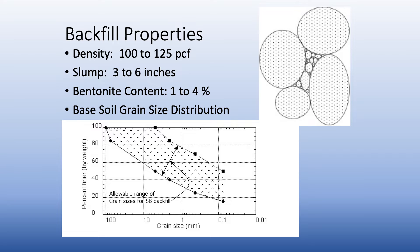The well-graded base soil also includes clay-sized particles. As shown in the schematic, the larger particles come together and make contact, leaving larger voids between them. These voids are then progressively filled by smaller and smaller particles. Bentonite water slurry is added to give the material a slump of three to six inches so it flows easily in the trench.